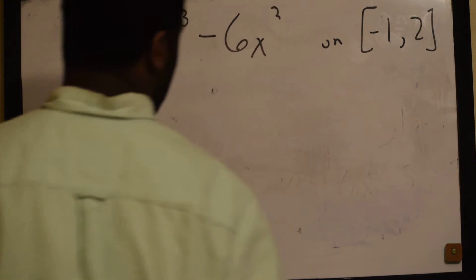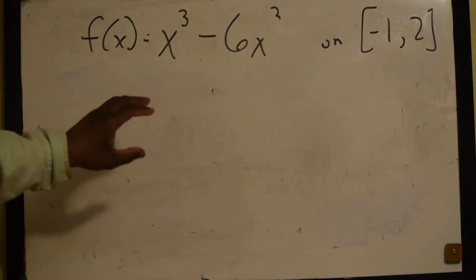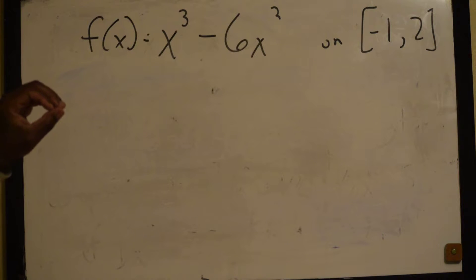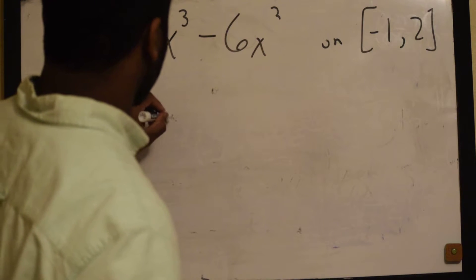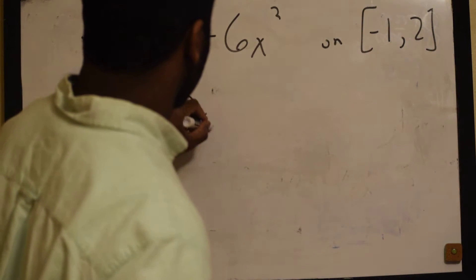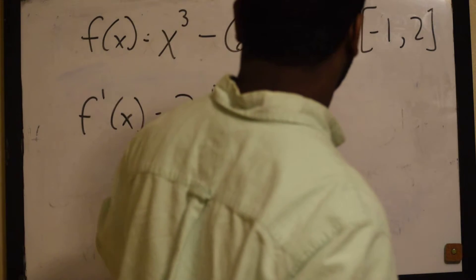Now, the first thing we have to do is find the derivative so we can find the critical number. That would be f prime of x, which would be equal to 3x squared minus 12x.